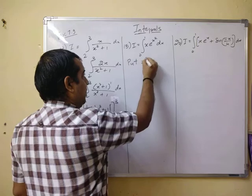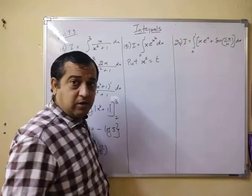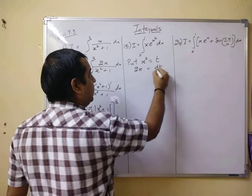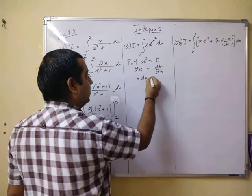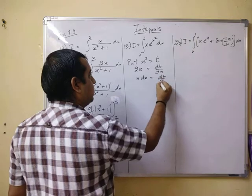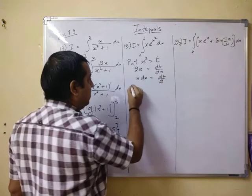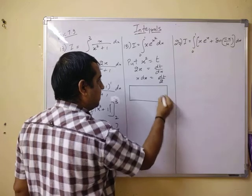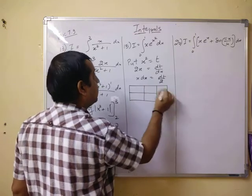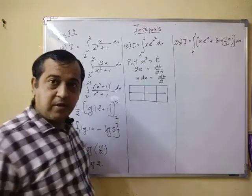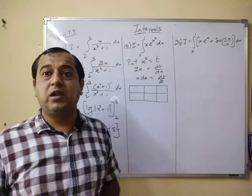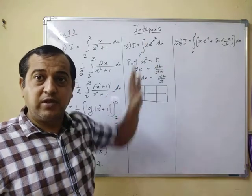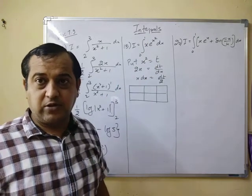So what you will do, put x square equal to t. This gives you 2x is equal to dt by dx and this gives you x dx equal to dt by 2. Now remember one thing. 0 and 1. These are the limits of x. Here you are integrating with respect to x. So 0 and 1, these are the limits of x.